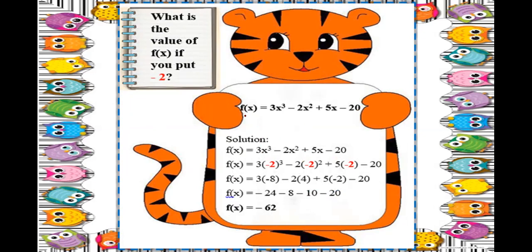We have the same given function. Write the given, then substitute the value of x. We have 3, and x is replaced by negative 2, with the exponent copied. Then minus 2, x is negative 2 again, exponent is positive 2. Plus 5 times x which is negative 2, then minus 20 at the end.